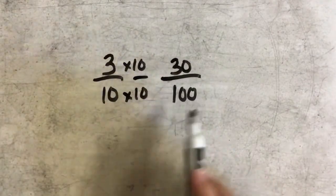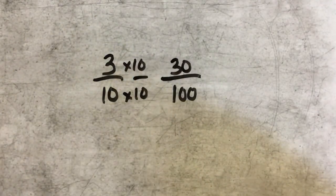So three-tenths is really equivalent to thirty-hundredths. Four-tenths.